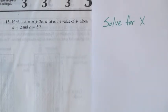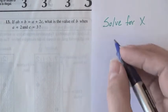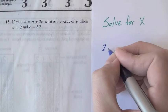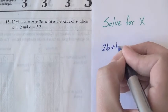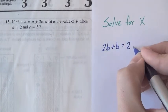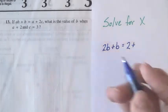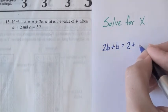To solve this problem, just start by substituting in the values you've been told for A and C. So we'll replace A with 2 and get 2B plus B is equal to 2 plus 2C, which is 2 times 3, or 6.